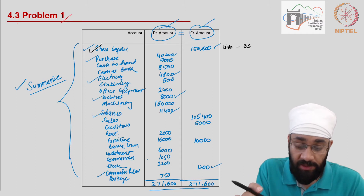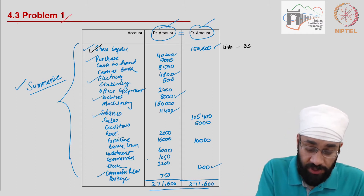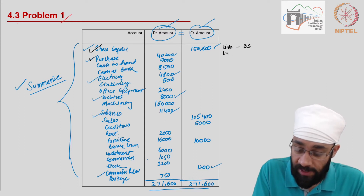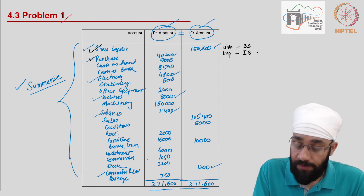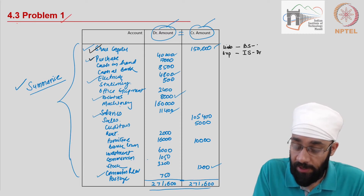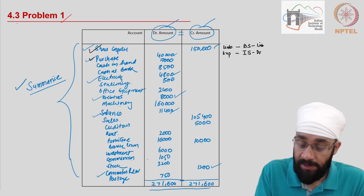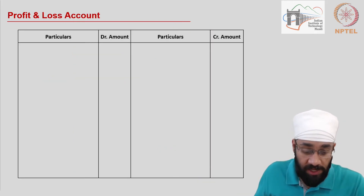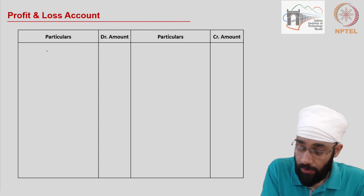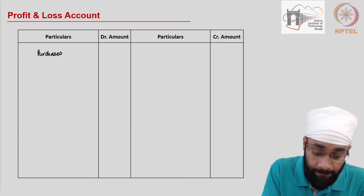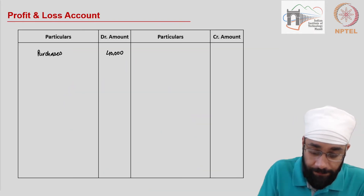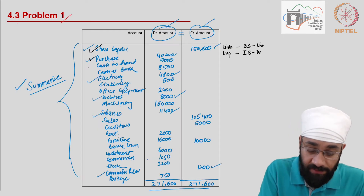Next up is purchases. Purchases, as we know, is an expense and it has to be shown in the income statement on the debit side. Purchases are going to go to the profit and loss account. I'm going to write purchases here with the amount of 40,000.